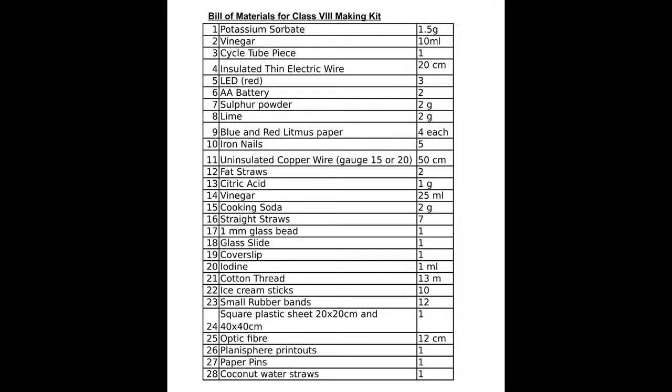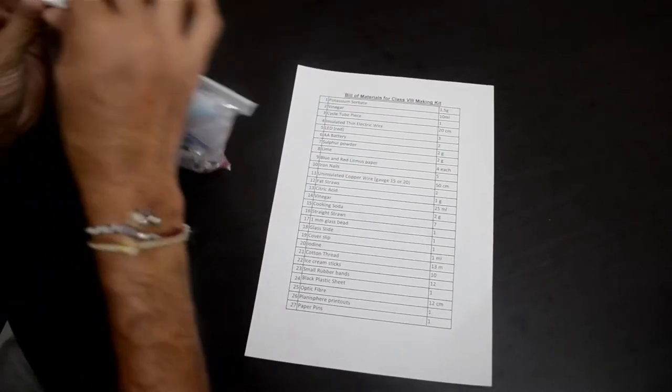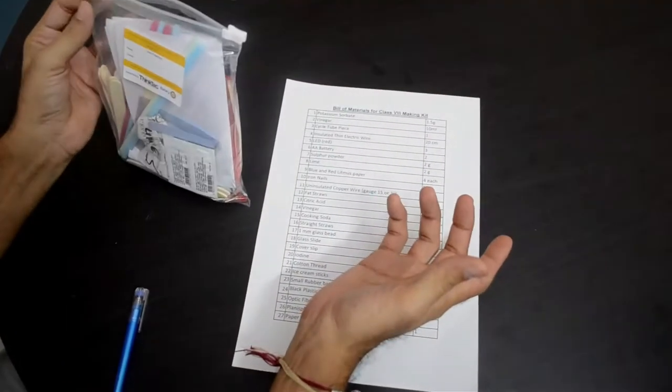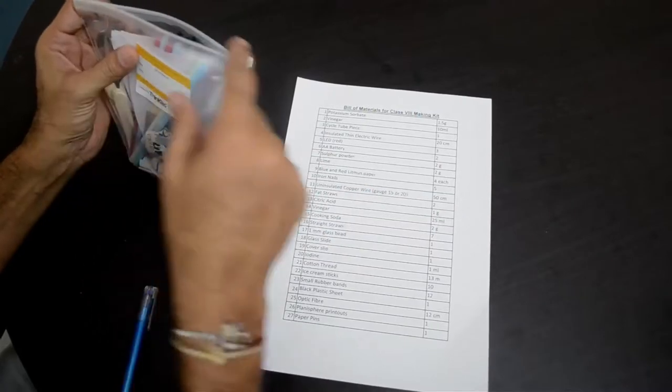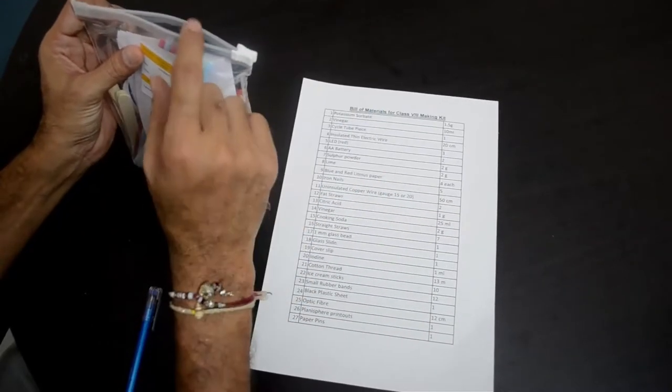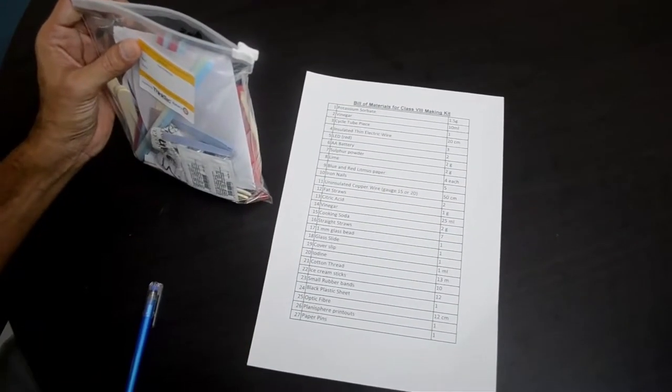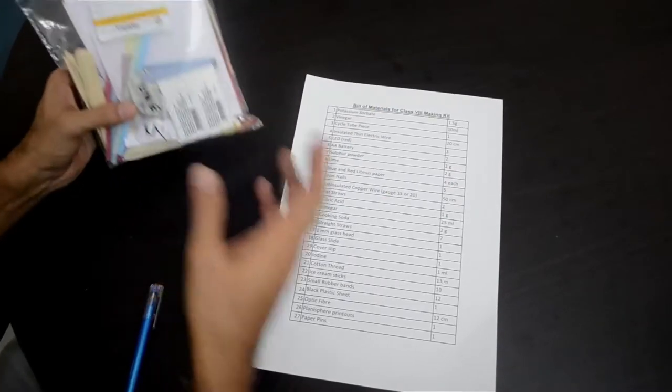In this video, we will look at the material packed in the class 8 making kit. There are 27 items. We will go through each of the items from the kit. When you open the ziplock, please be careful. If you pull it further, this may come off and the ziplock will stop working, so then you will again have to repair it.